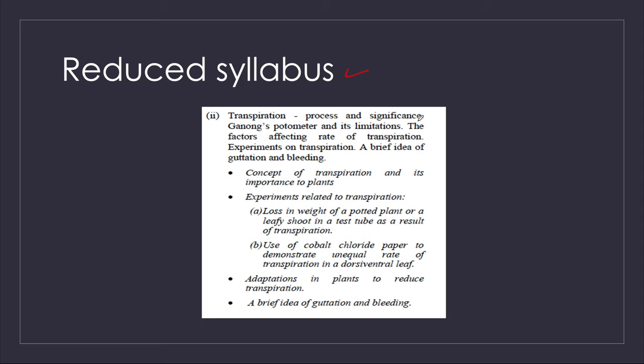We also have the Ganon's potometer and its limitations, the factors affecting the rate of transpiration, experiments on transpiration, a brief idea of guttation and bleeding, the concept of transpiration and its importance to plants, experiments related to transportation, the laws involving a potted leafy shoot in a test tube as a result of transpiration, the cobalt chloride paper experiment, and adaptations in plants to reduce transpiration.